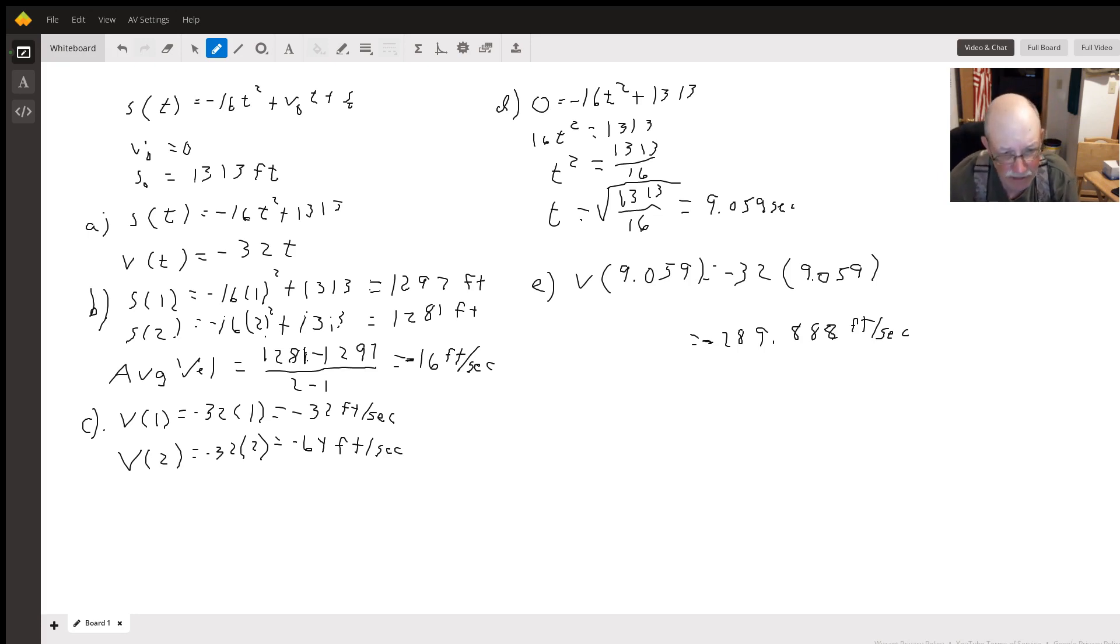To find the instantaneous velocities at one and two seconds, we use the velocity function that we came up with in part A. So we plug one and two into that. The instantaneous velocity at one second is -32 feet per second, and at two seconds it's -64 feet per second.